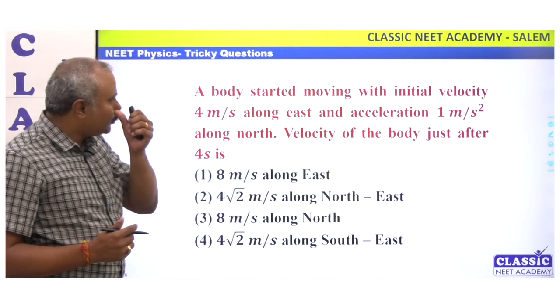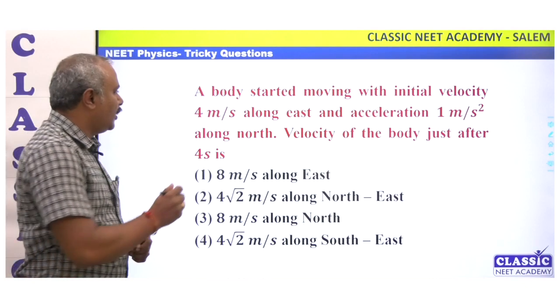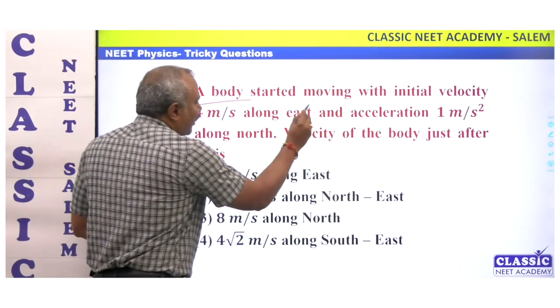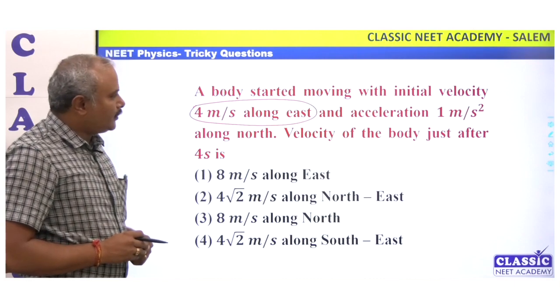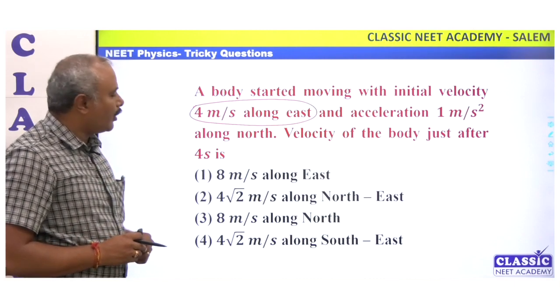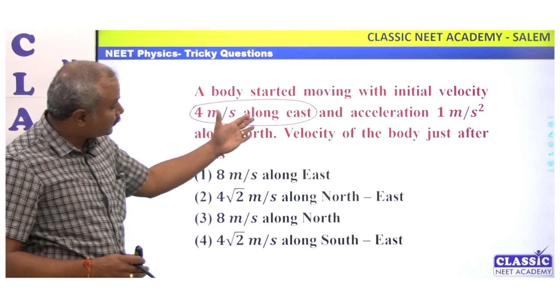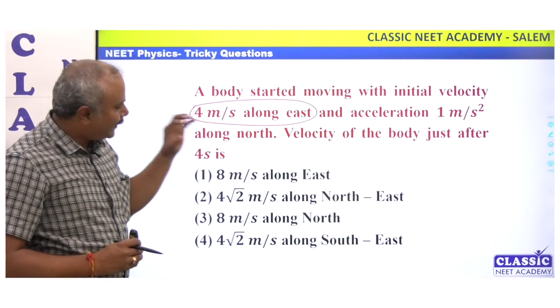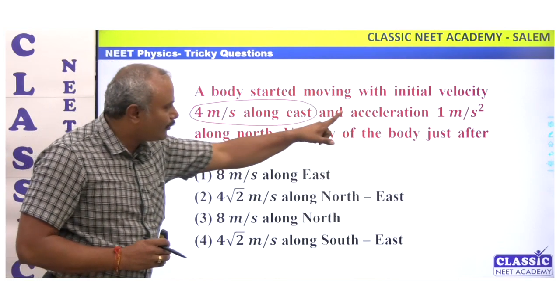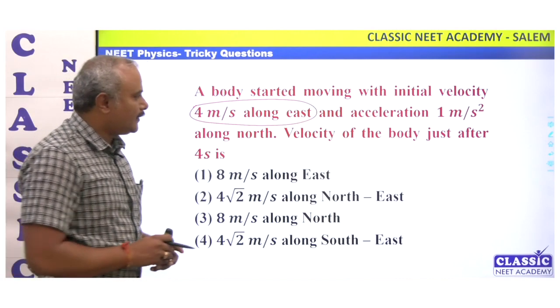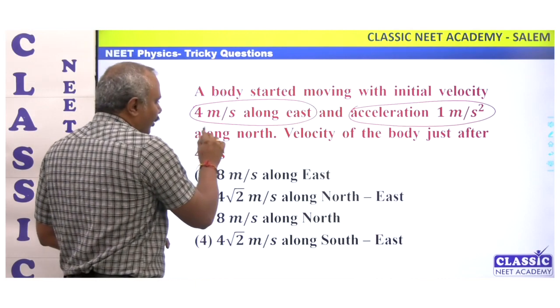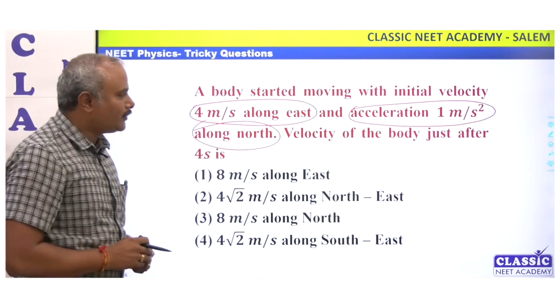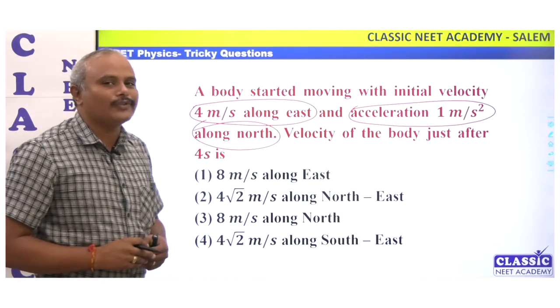A body started moving with initial velocity 4 meters per second along east and acceleration 1 meter per second squared along north. The velocity of the body just after 4 seconds is what we need to find.